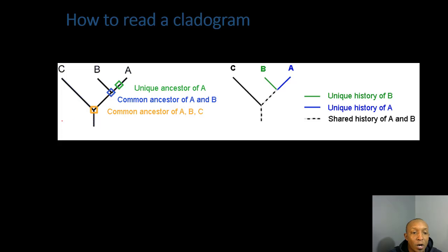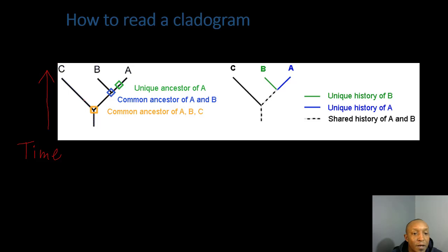Time on this cladogram starts at the bottom and goes up. The oldest ancestor is at the very root. Descendants A, B, and C share a common ancestor at this point. As we go up, descendant C speciates, then descendant B, then descendant A. Descendants A and B have a common ancestor because they branch off together.